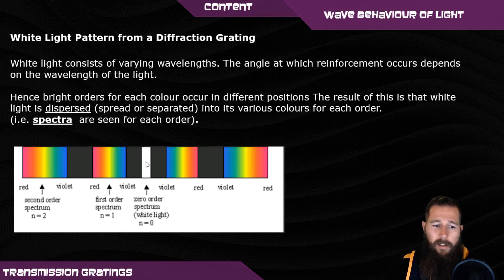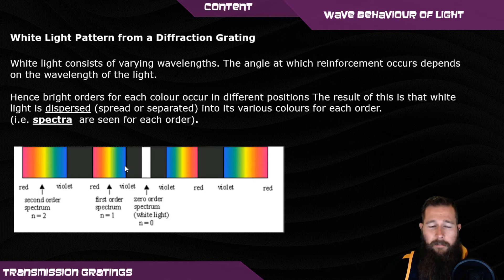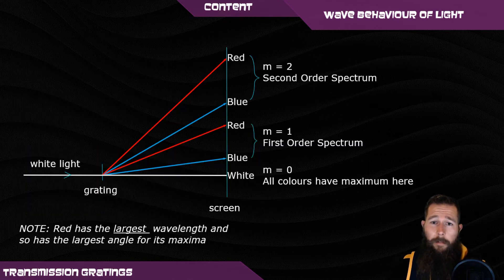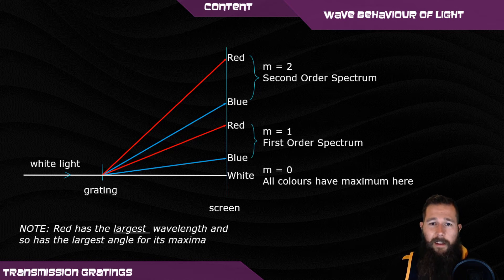In the diagram on the screen, the white light is at the central maximum. The first-order spectrum has violet going through to red, due to the fact that different wavelengths diffract different amounts. Using our equation for diffraction, blue or violet — at that end of the visible spectrum — has the shortest wavelength and therefore diffracts the least, while red has the longest wavelength so it diffracts the most.